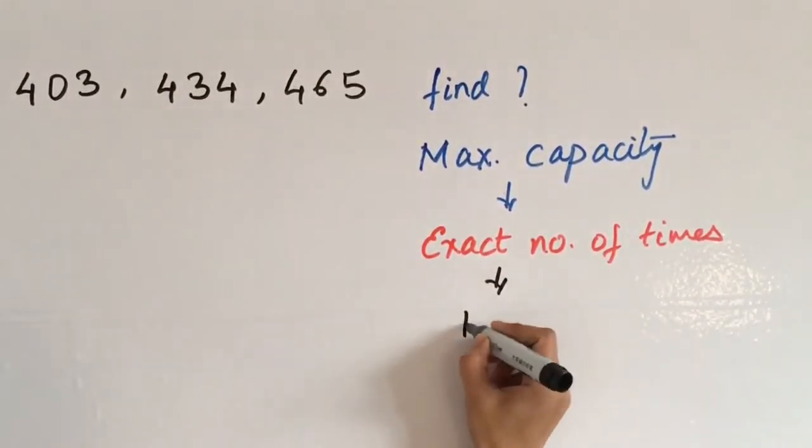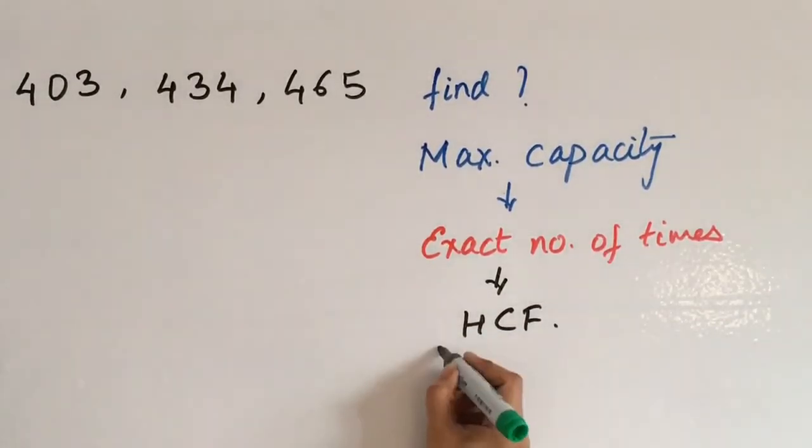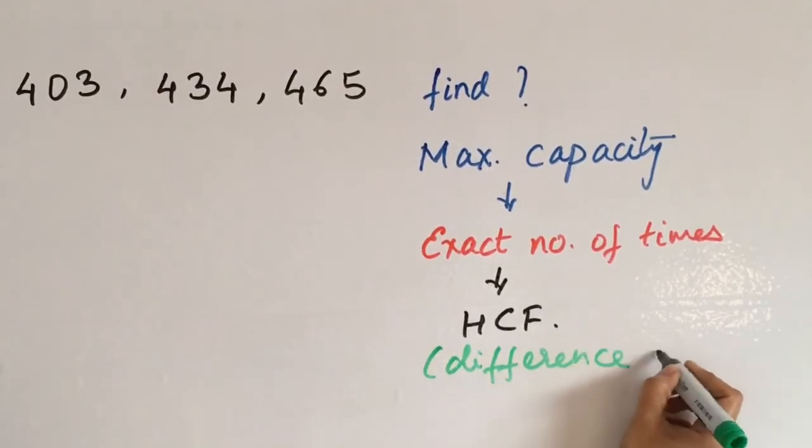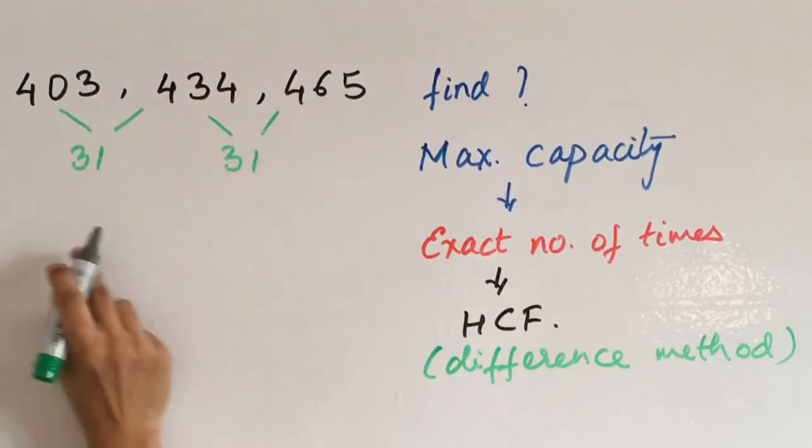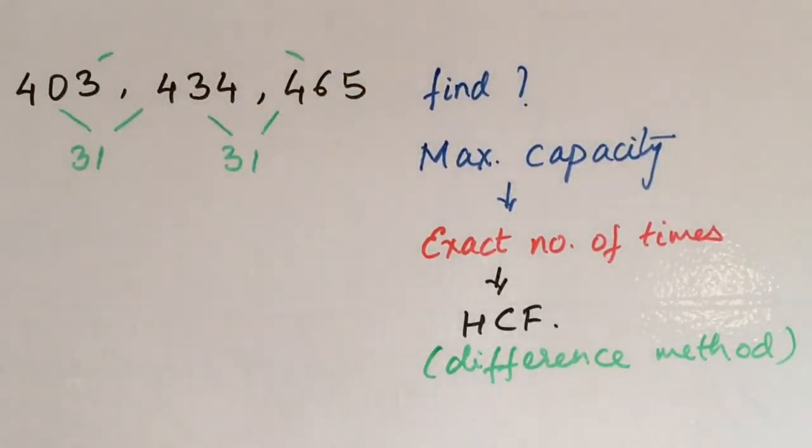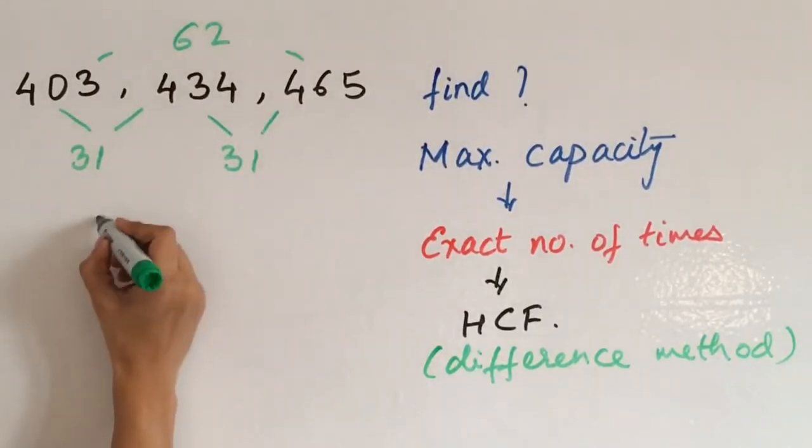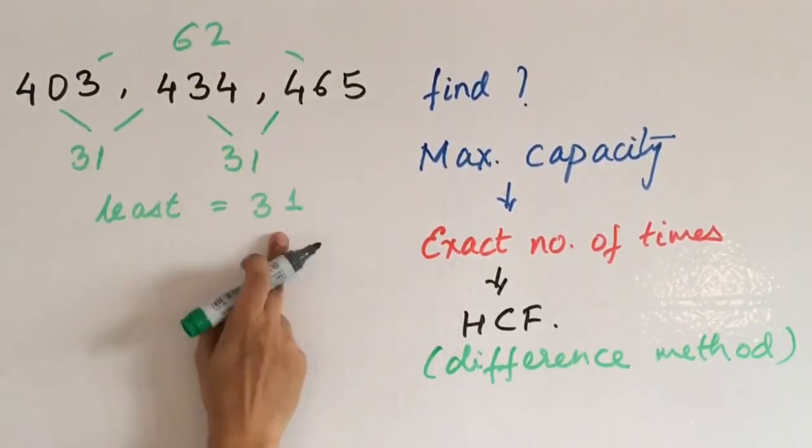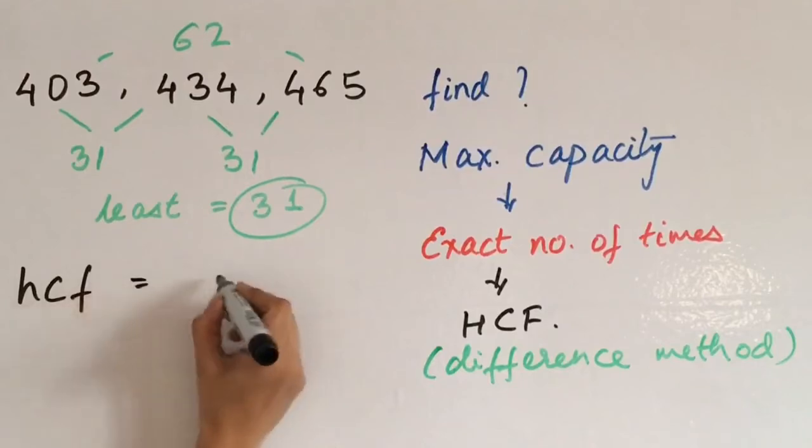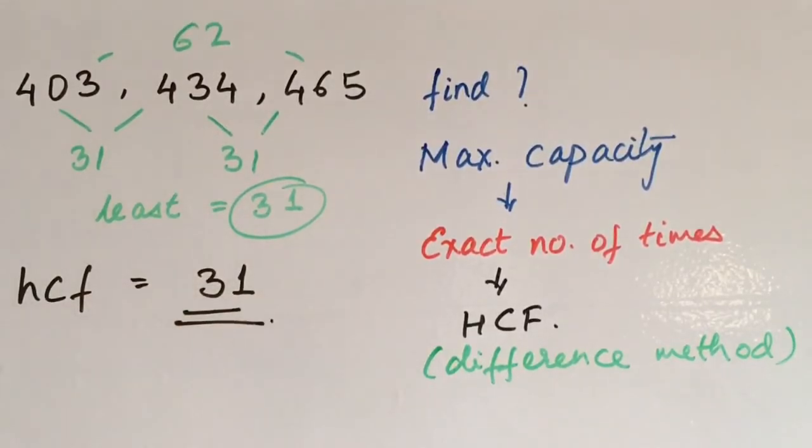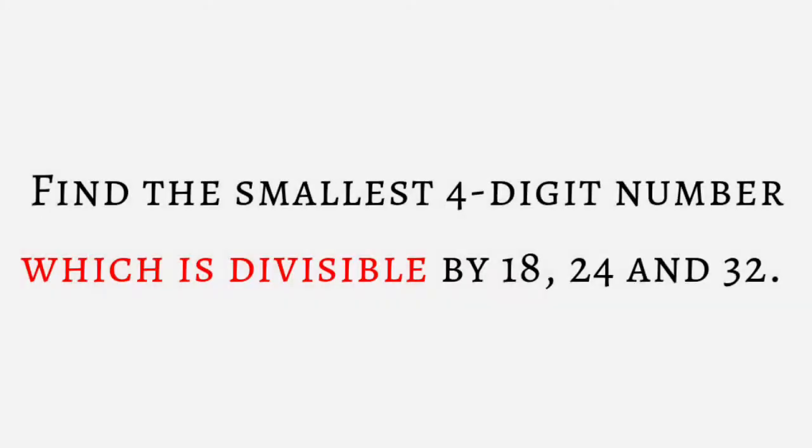So we have to find a common factor that is HCF. The numbers have higher values, so we will find HCF using the difference method. 434 and 403 difference is 31. 465 and 434 difference is also 31. And difference of 465 and 403 is 62. Among these three differences, we consider the least difference that is 31. We cannot factorize this further. Therefore, HCF is 31. Therefore, the container's maximum capacity is 31 liters, which will measure these three fuel capacities exact number of times.